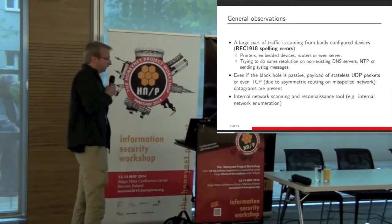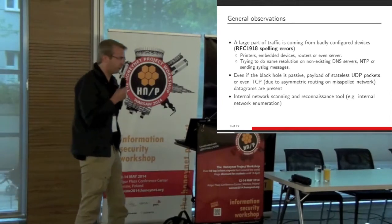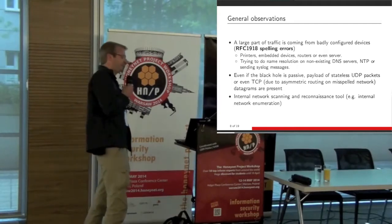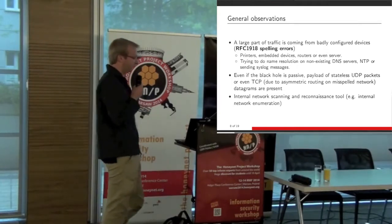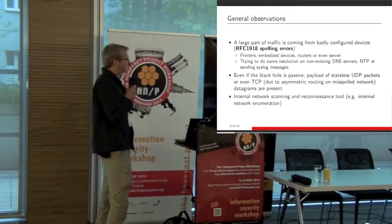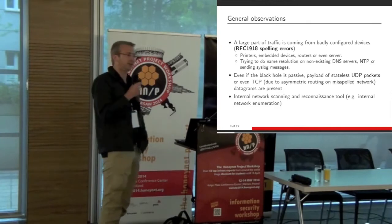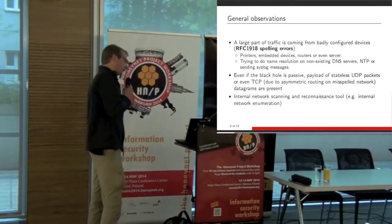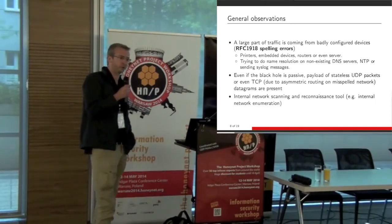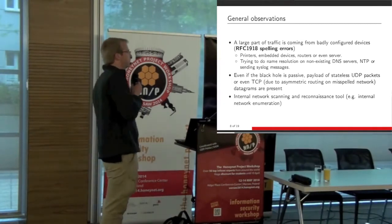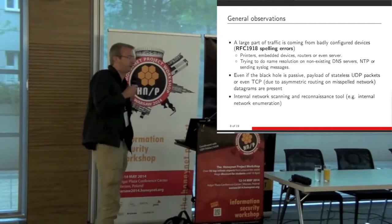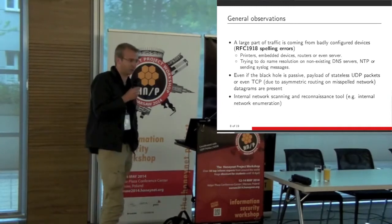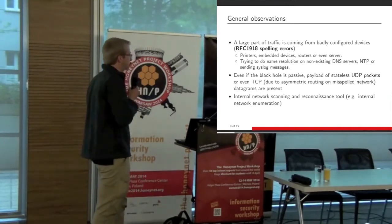We have a huge set of IP packets with TCP datagrams inside containing payloads, even though it's a black hole. Why? Because some asymmetric routings are misconfigured and some packets come back to the black hole, giving us full payload. The interesting part is that payload close to private networks is not coming from the internet — it's basically payload coming from internal networks. So you might see some really sensitive information inside them.